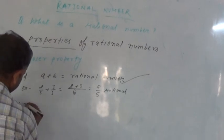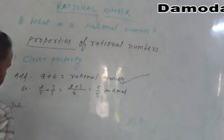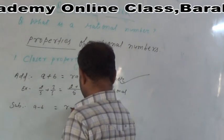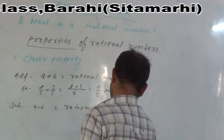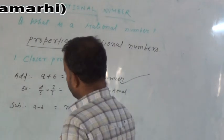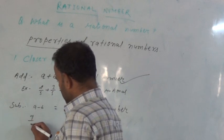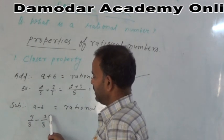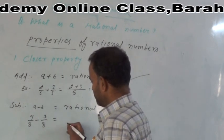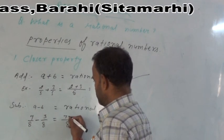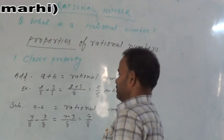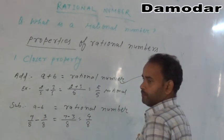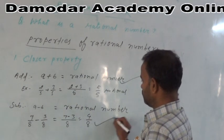Now subtraction. A - B should be a rational number. For example, we are taking 7/8 - 3/8. We see 7/8 is a rational number and 3/8 is also a rational number. So we subtract, here 7 - 3 is equal to 4/8. So here we see that the difference of two rational numbers is a rational number, so it also follows the closure property.